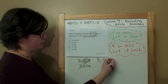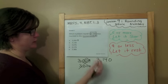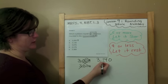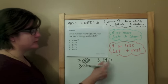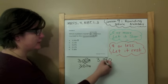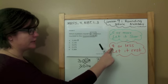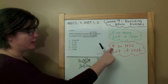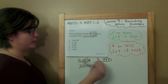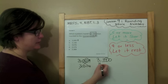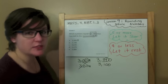Alright, 3,140. Rounding to the nearest hundred, which is right here. When you round, underline the place. Spotlight to the right — decide the digit's fate. Four or less, you better let it rest. Drop it down and everything else becomes zeros.